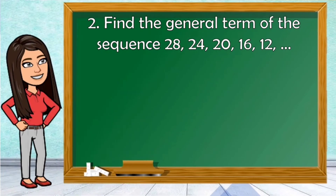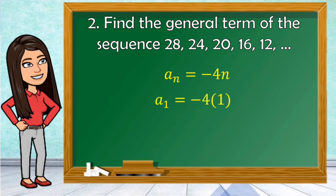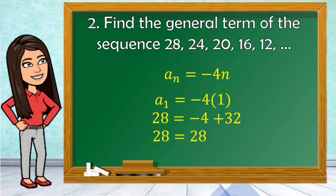For the next example, find the general term of the sequence 28, 24, 20, 16, and 12. The pattern here is subtracting 4 from the previous term to get the next term. So we have a sub n is equal to negative 4n. Using the first term, a sub 1 is equal to negative 4 times 1, which is negative 4. But a sub 1 is 28. We should add 32 to negative 4 to get 28. So the general term is a sub n is equal to negative 4n plus 32.